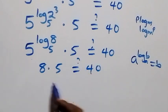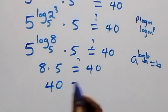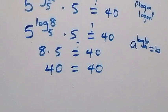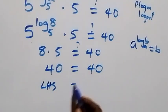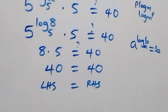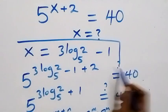Since 5 raised to power log₅(2³) equals 2³ equals 8, we get 8 times 5, which equals 40. The left-hand side equals the right-hand side.